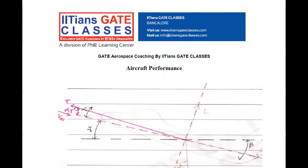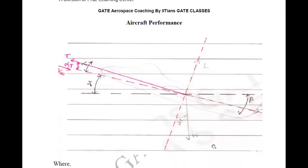Resolving forces parallel to the free-stream velocity: for thrust, when resolving towards the angle it is cosine, away from the angle it is sine. So resolving gives T·cos(alpha_t) minus drag, minus W·sin(gamma) because it is going away from the thrust axis and opposite to it. So the equation parallel to the free-stream velocity is: T·cos(alpha_t) − Drag − W·sin(gamma) = mass × acceleration.